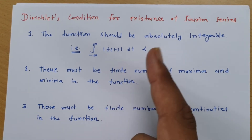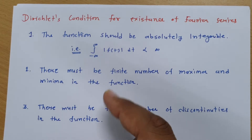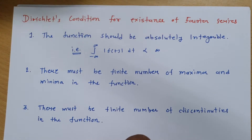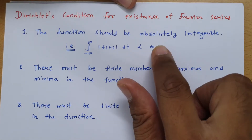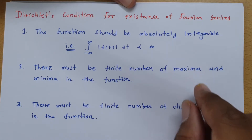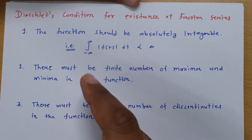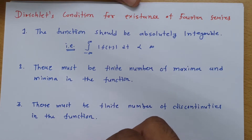I have mentioned all three conditions here. The first condition is that the function should be absolutely integrable. If the function is not absolutely integrable, then the Fourier transform of that signal does not exist. So the first Dirichlet condition is that the function should be absolutely integrable.